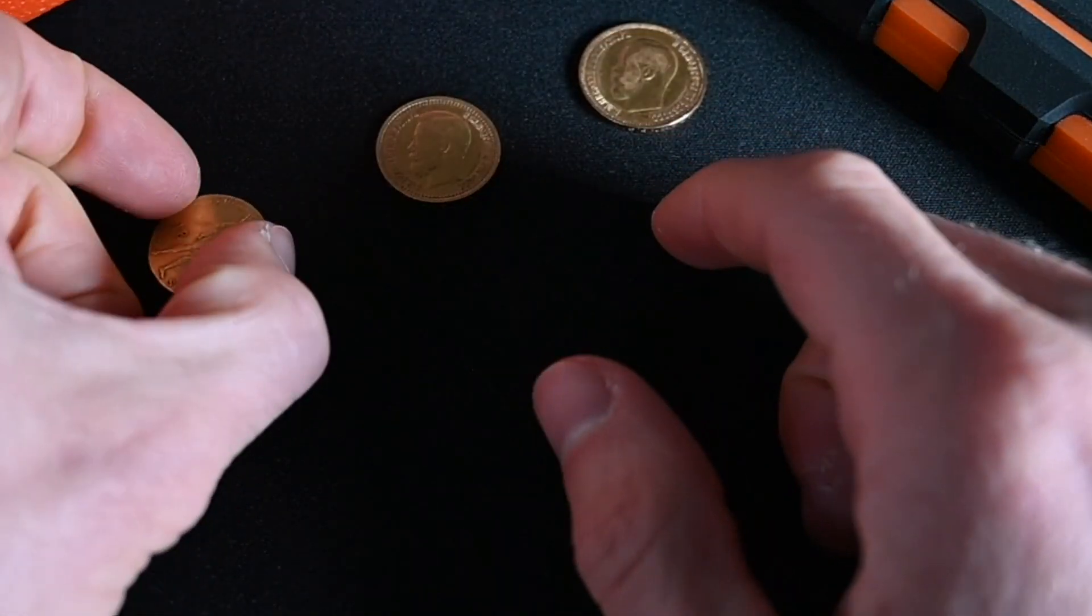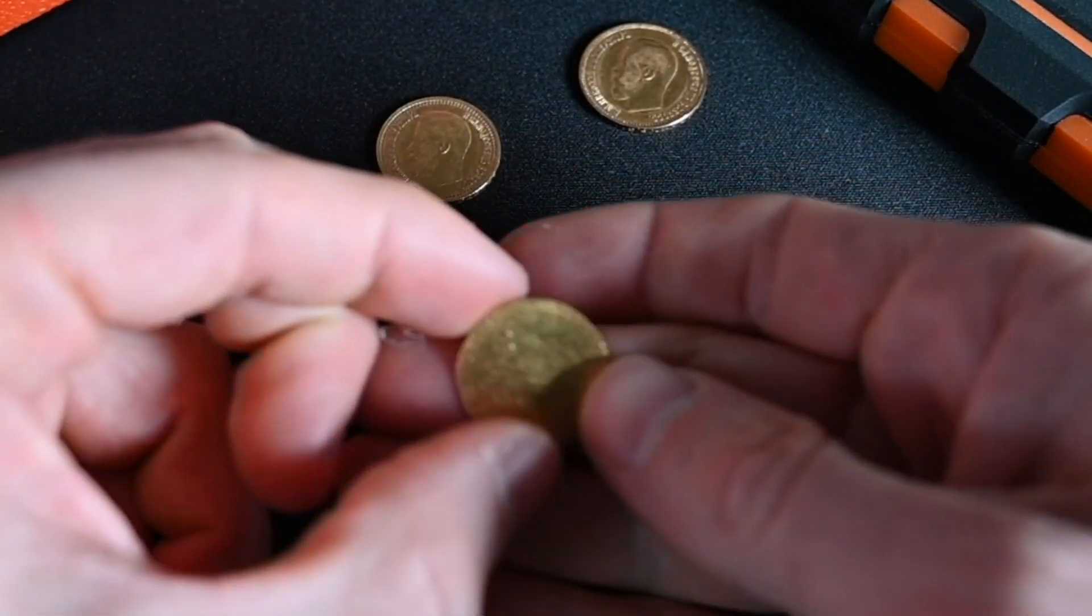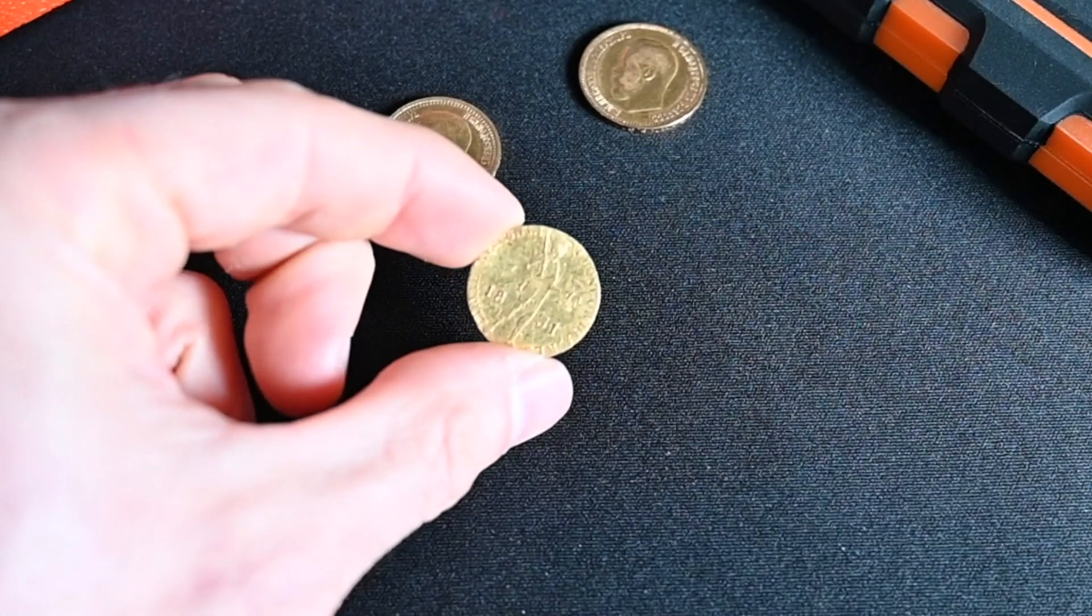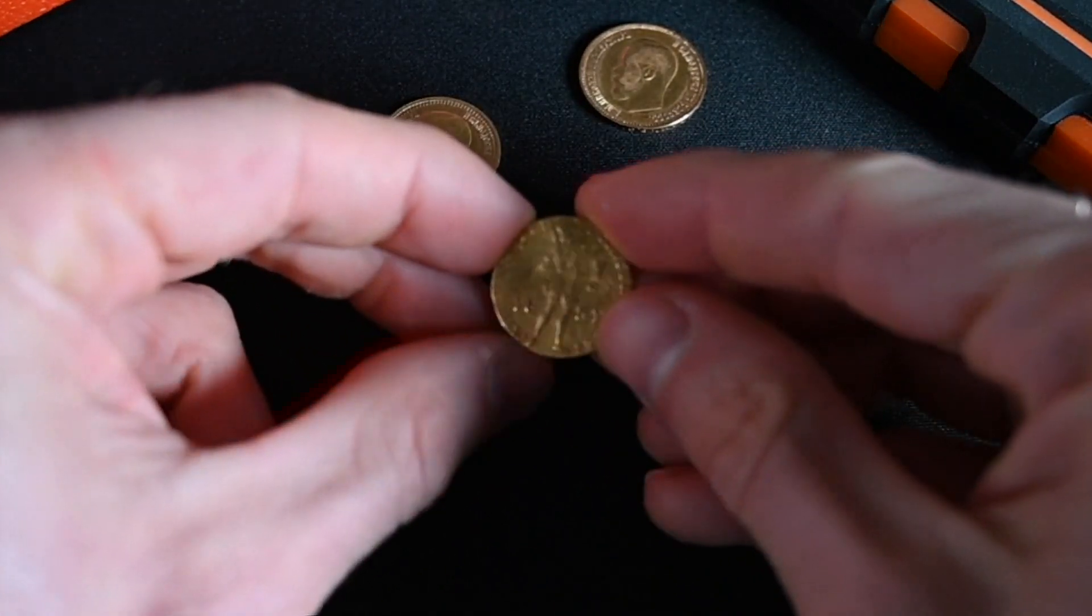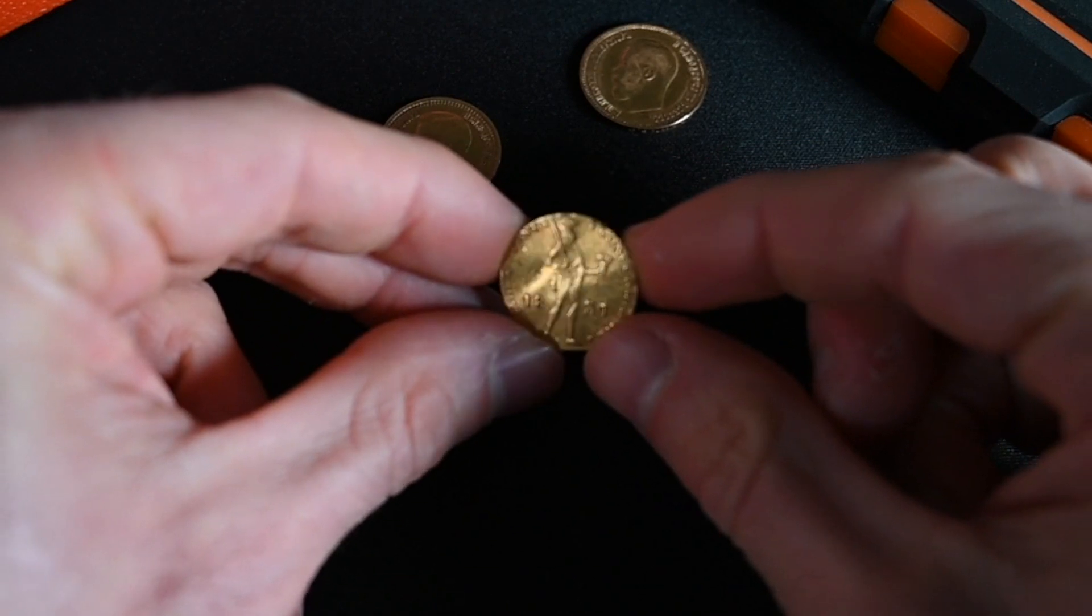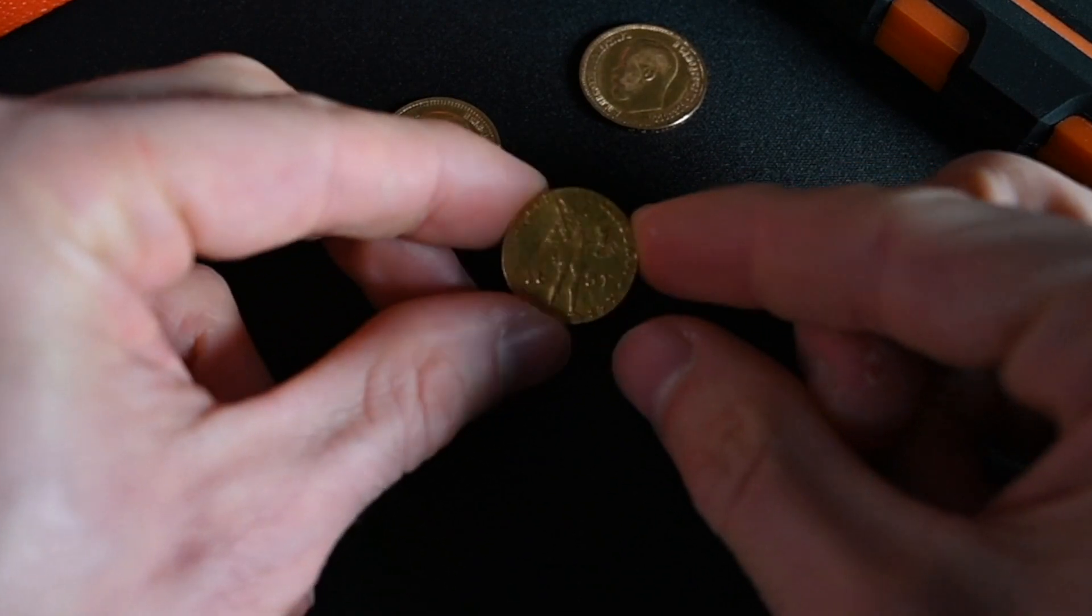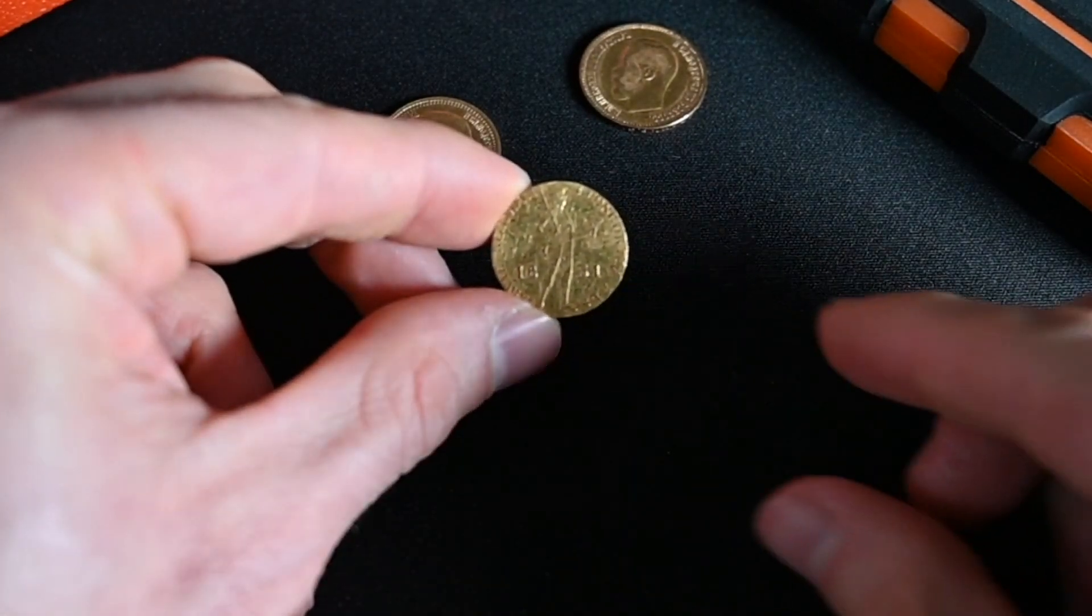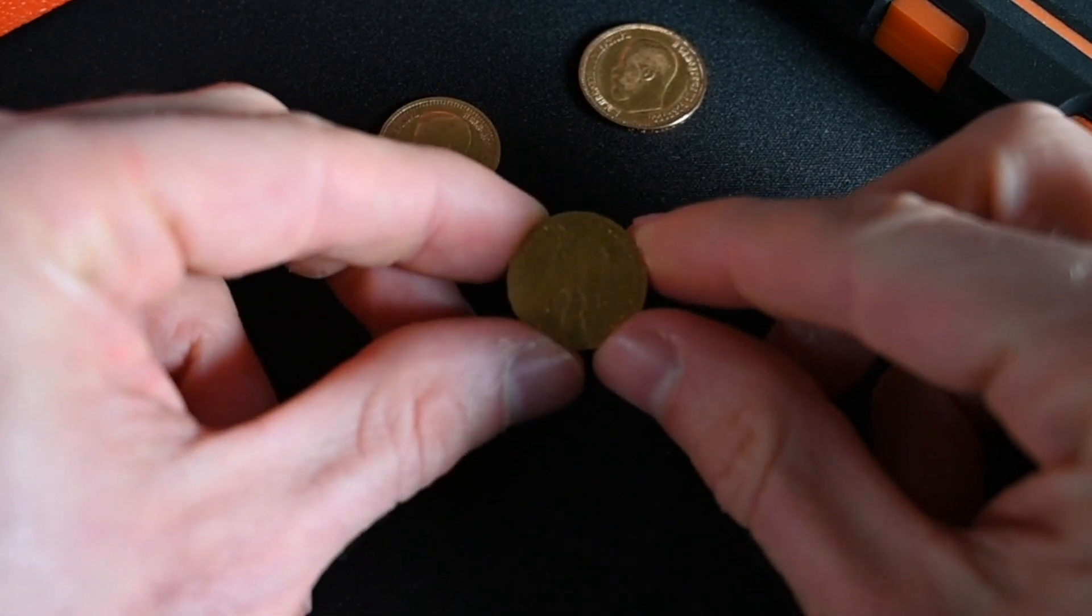This one, however, is incredibly interesting. This is, at first glance, not even a Russian coin. At first glance, this is a Dutch coin. This is a Dutch gold ducat. And this one is from 1831.